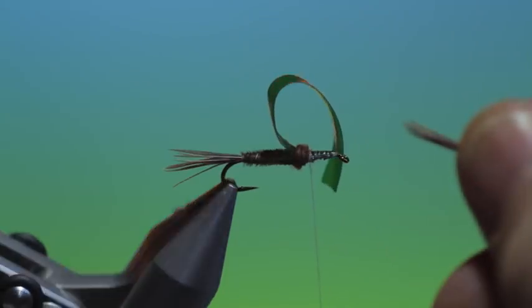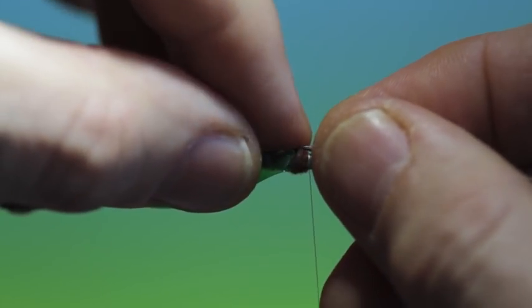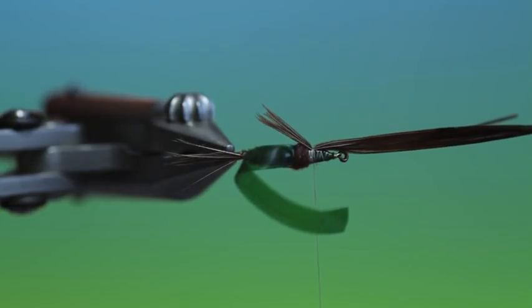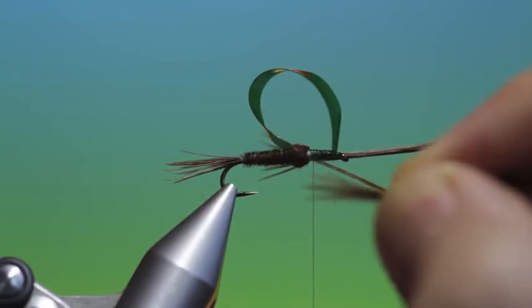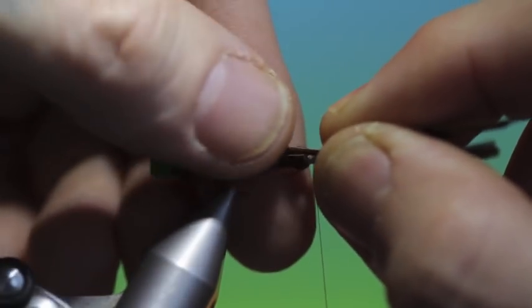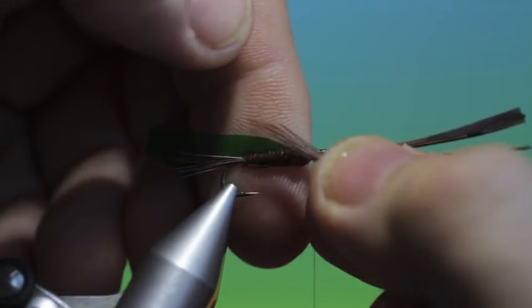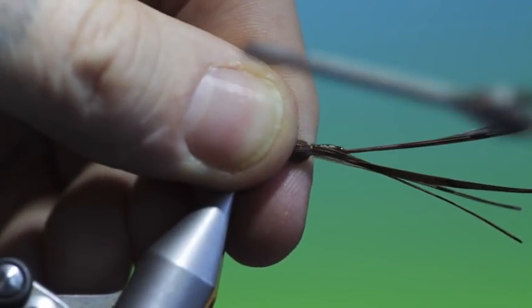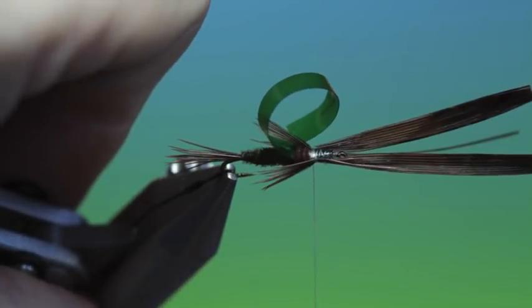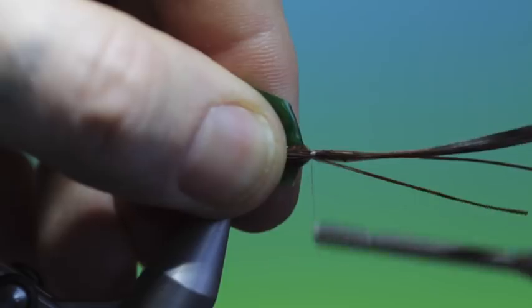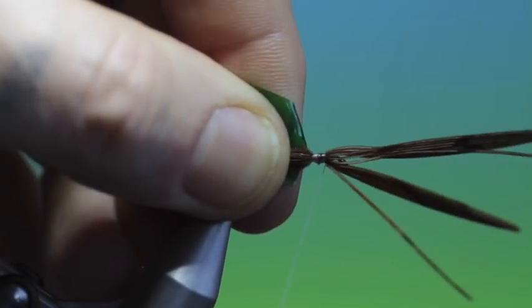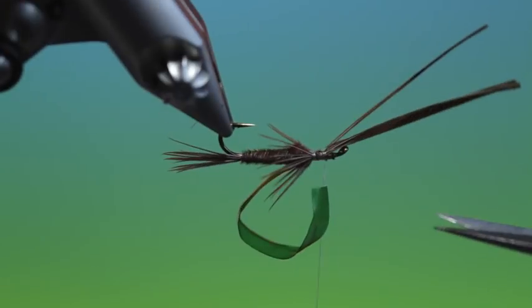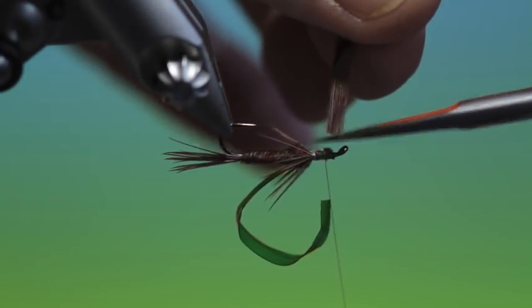Then we need two small strips of pheasant tail fibres again for the legs. So I'm going to put this one in there. Tie these in a little bit longer on this side because we can pull them through to the correct length. There we go. I'll just tie these down. Go forward again. I can get rid of all this surplus. Very good.